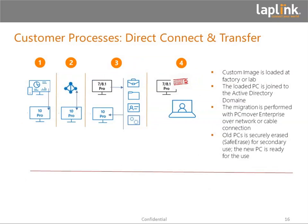Most of our customers — especially smaller businesses, small government, and municipal governments — may go with a direct connect and transfer method: put the image on your new Windows 10 machine, log into the Active Directory domain, and move directly from the Windows 7 or 8.1 machine to Windows 10. This also applies to Windows 10 to Windows 10 when you refresh hardware. We always go above the OS, so we don't take any OS pieces with us. You can always roll back the whole migration process if something isn't right, and afterwards you can delete your old machine once you're satisfied.